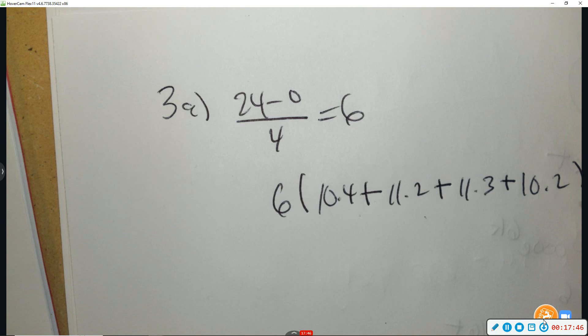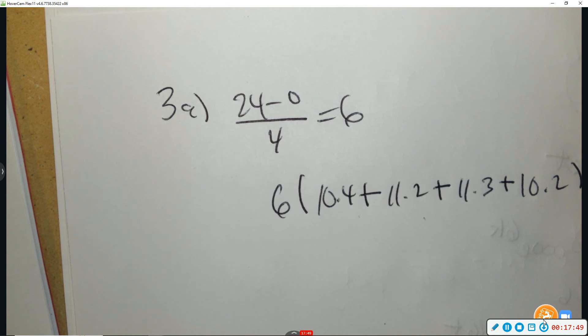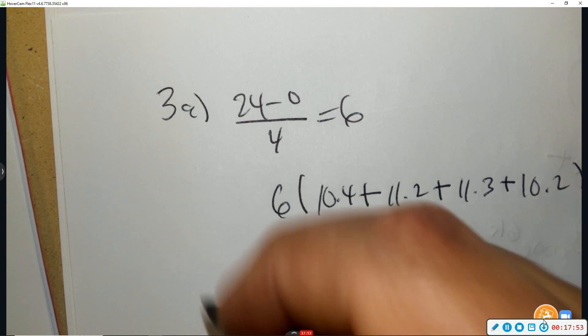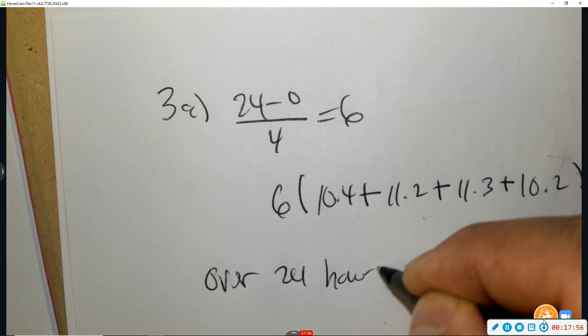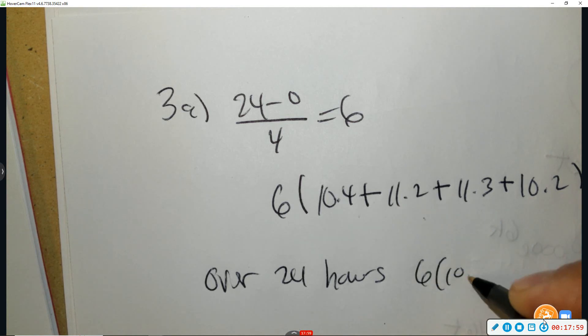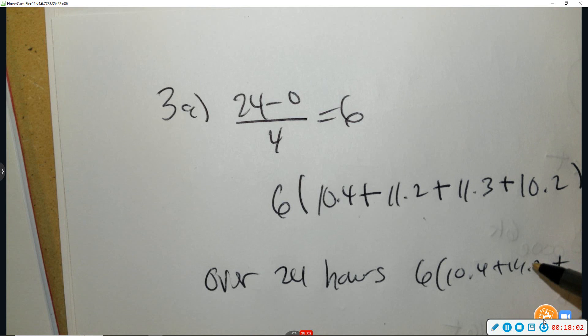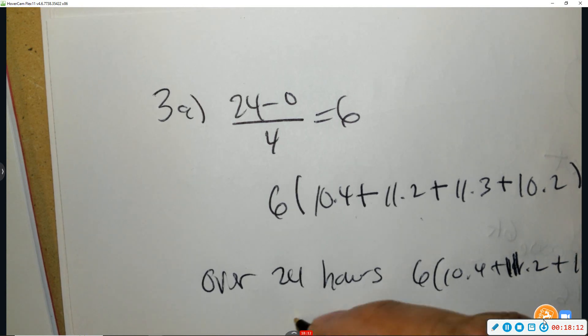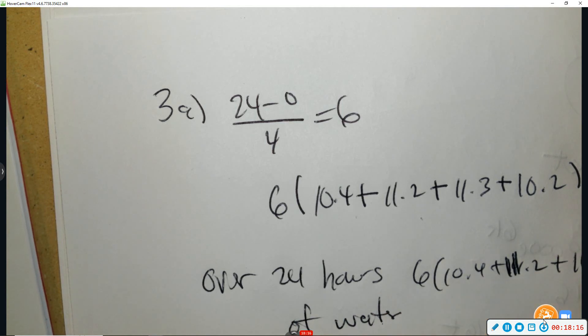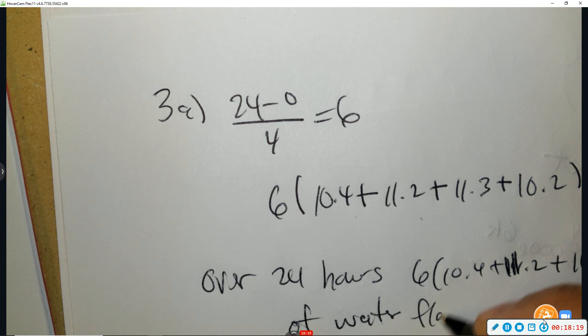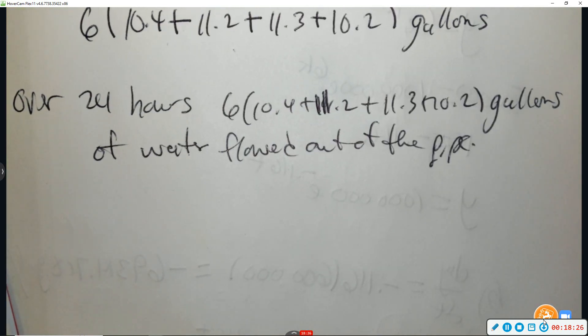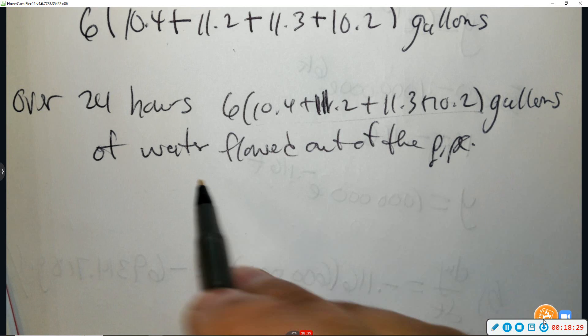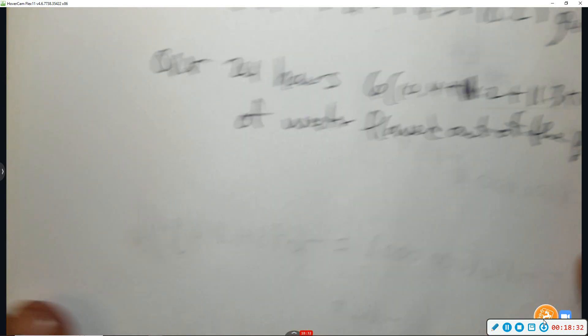Oh, the units would be gallons. And explain the meaning of your answer. So over 24 hours, that many gallons of water flowed out of a pipe. So it tells you how much when you integrate. So over 24 hours, that amount of gallons of water flowed out of the pipe. Next.